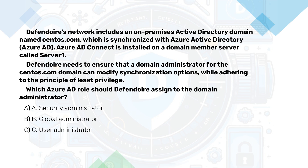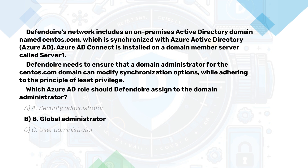Our network includes an on-premises Active Directory domain which is synchronized with Azure Active Directory. Azure Active Directory Connect is installed on a domain member server. We need to ensure that a domain administrator for the domain can modify synchronization options while adhering to the principle of least privilege. Which Azure Active Directory role should we assign to the domain administrator? A. Security administrator. B. Global administrator. C. User administrator. Now pause the video, think, then continue. To ensure the domain administrator can modify synchronization options in Azure Active Directory Connect, the correct role is the Global Administrator role in Azure Active Directory.